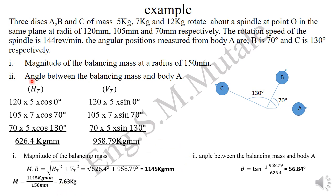The angle between the balancing mass and body A is given by arctan of the total vertical components divided by the total horizontal components. Dividing 958.79 by 626.4 and taking the arctangent gives 56.8 degrees. This marks the end of the presentation.